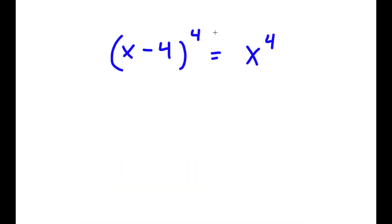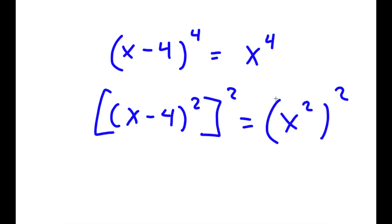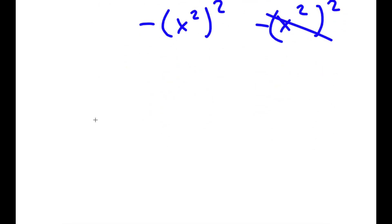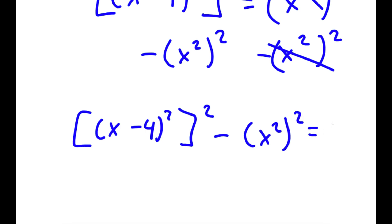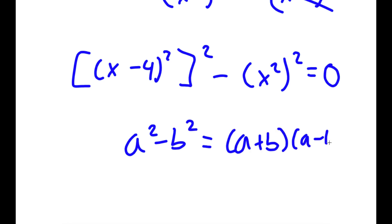In this problem, I have x minus 4 to the power of 4 is equal to x to the power of 4. To start, I'm going to rewrite this as x minus 4 squared to the power of 2 is equal to x squared to the power of 2. Then I subtract both sides by x squared to the power of 2, and applying the difference of squares — a squared minus b squared equals a plus b times a minus b.